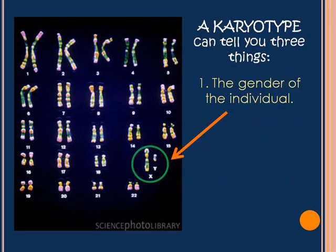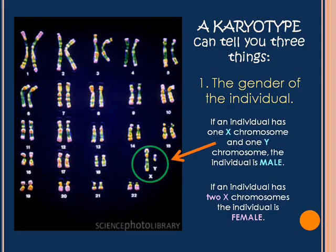Those autosomes and sex chromosomes lead into the next part. Karyotypes are really important because they tell us three different things. The first thing they can tell you is the gender of an individual. If an individual has an X chromosome and a Y chromosome, then the individual is male. If an individual has two X chromosomes, then the individual is female.